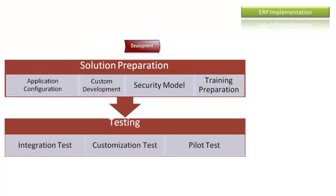In the Development phase, it's time to execute — configuring the application according to the design output of the previous phase, and developing the customized solution and modifications. Security models are executed and training sessions are prepared for key users and end users. Testing is performed for both internal and external integration as unit tests, and customization is tested from both functional and technical points of view, fixing bugs and errors.